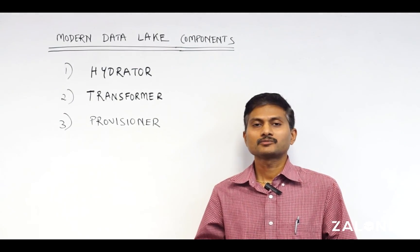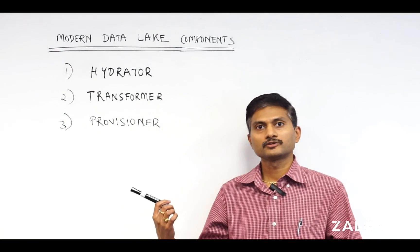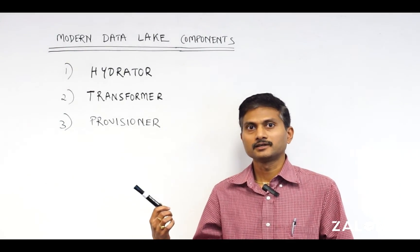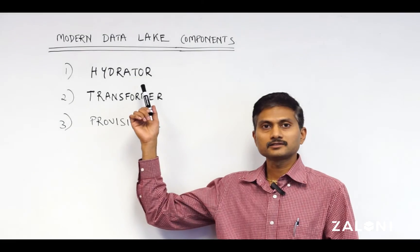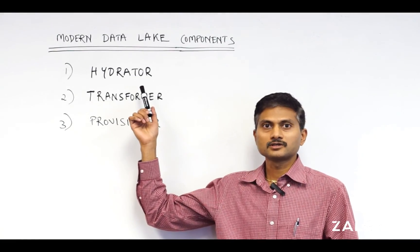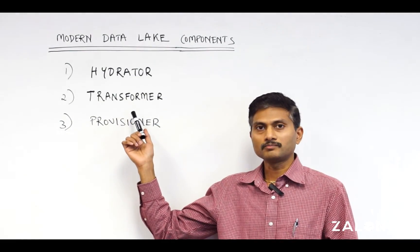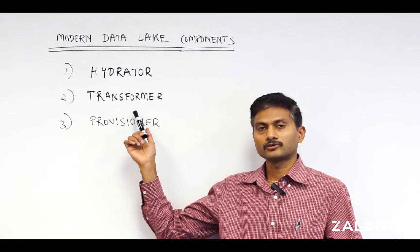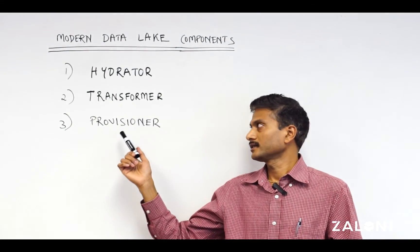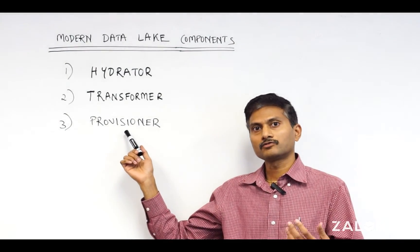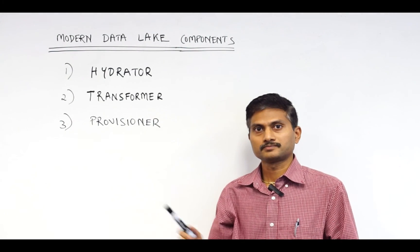So to summarize, we looked at three key components of the modern data lake architecture today. We looked at how do you hydrate the data lake from various sources, how do you transform the data lake from the raw zone to enriched zone, and then how do you provision data from the data lake to your consumers. Thank you.